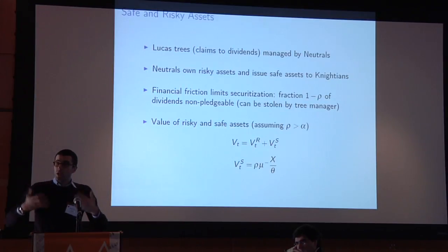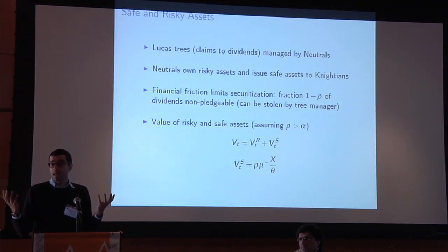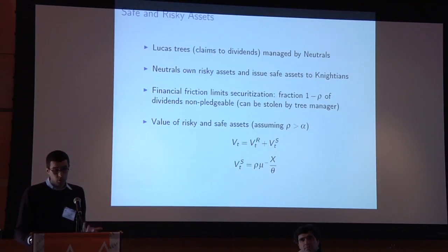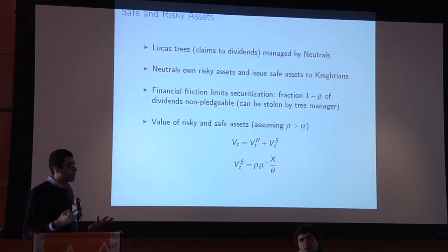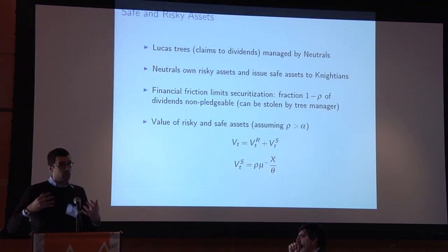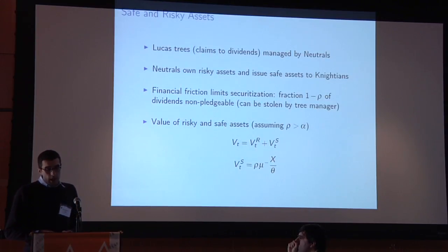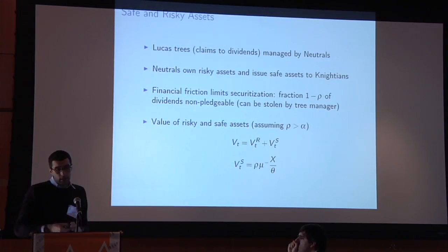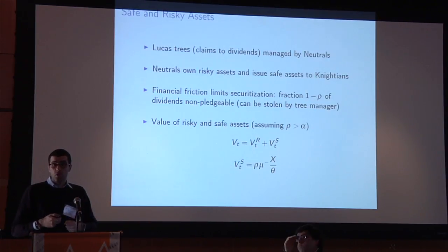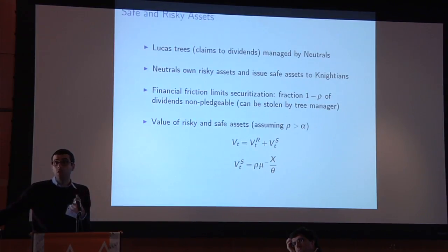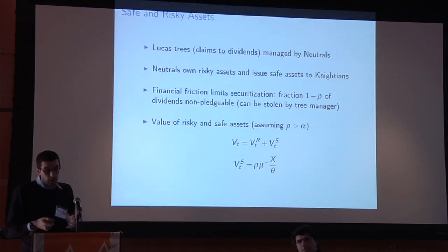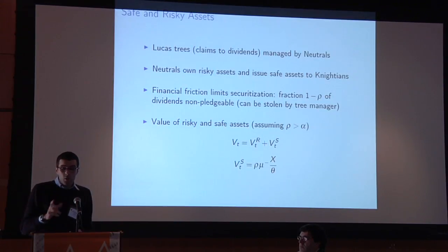These agents are born, earn income, and then want to save. What distinguishes neutrals and Knightians is how they save — how they invest their portfolios, what stores of value they acquire. The stores of value in this economy include Lucas trees: assets that are claims to dividends, managed by neutrals. Neutrals own these risky assets and securitize them — backed by risky assets, they issue safe assets to the Knightians. They act as intermediary to the Knightians, and that's where all the securitization takes place.